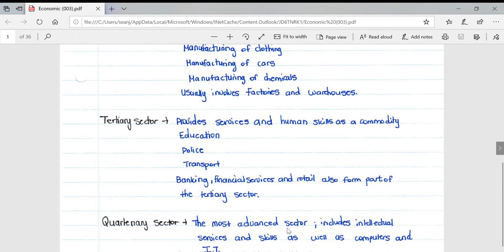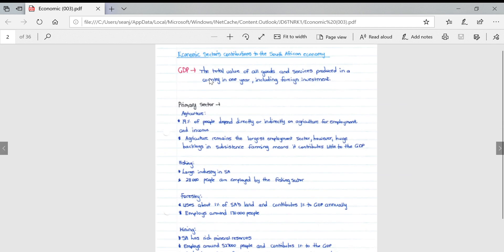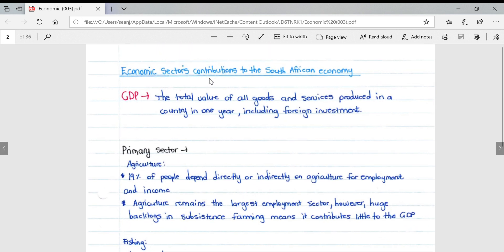The quaternary sector is the most advanced sector. It includes intellectual services and skills as well as computers and IT.